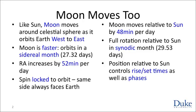As the moon orbits the Earth, it also rotates about its axis. This means that we are always seeing the same side of the moon as it rotates around us. While there is no such thing as the dark side of the moon, there certainly is such a thing as the far side of the moon — parts of the moon that are never visible from Earth.